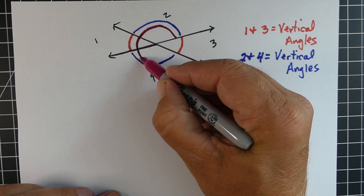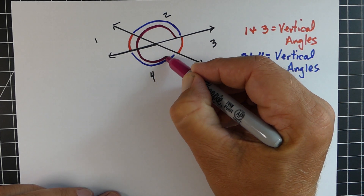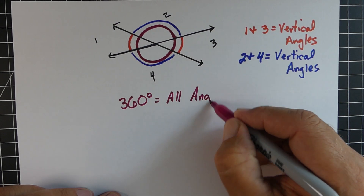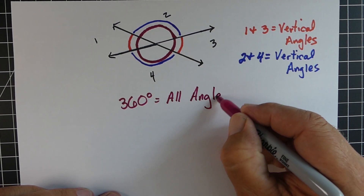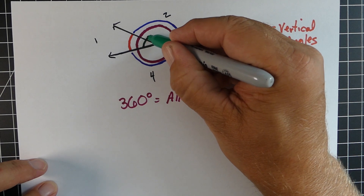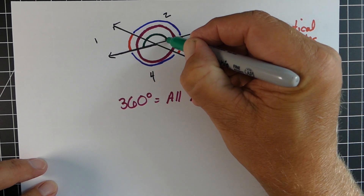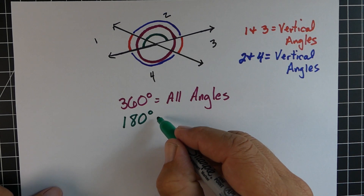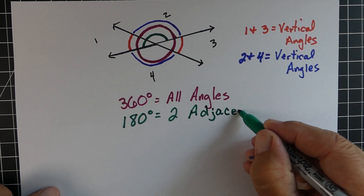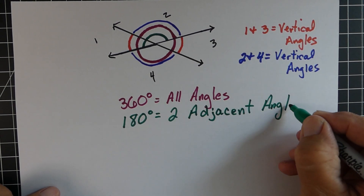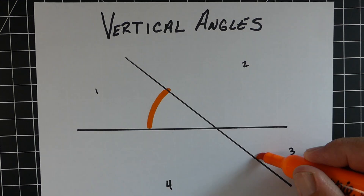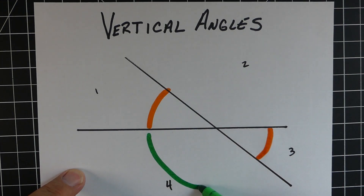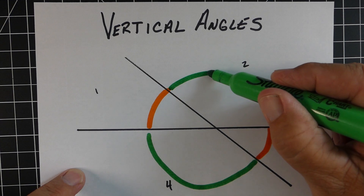Now another thing is when you're looking at all these angles, you'll notice that they all together form a circle, so all these angles are going to equal 360 degrees. Two adjacent angles — two angles side by side — are going to equal 180 degrees. So just a quick recap: angles that are across from each other, like angles one and three or angles two and four, are called vertical angles.